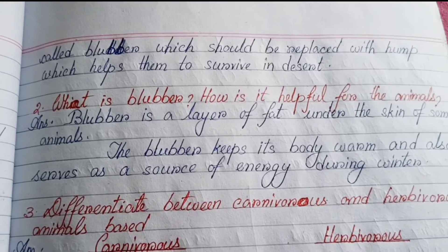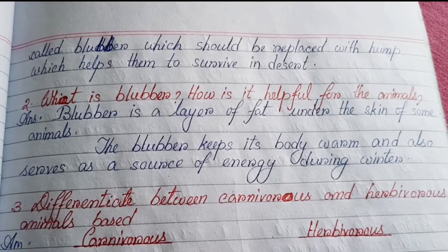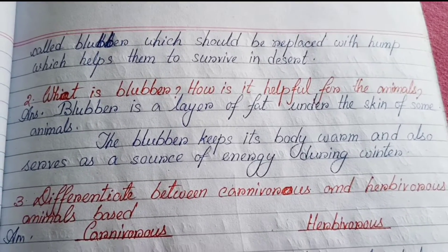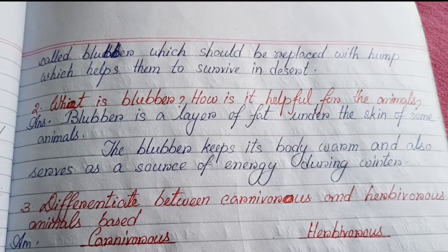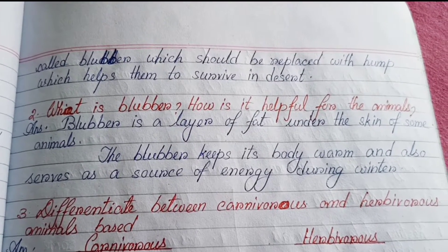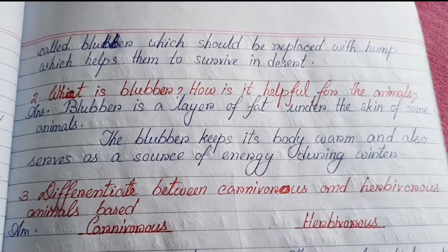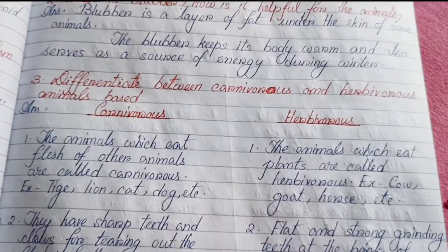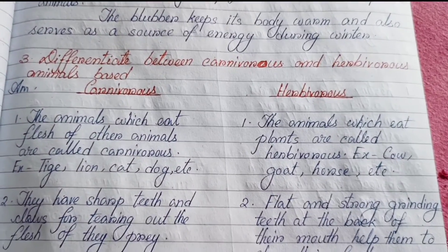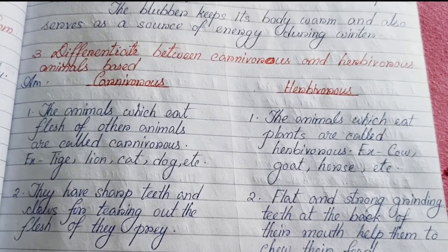Number two — What is blubber? How is it helpful for animals? Blubber is a layer of fat under the skin of some animals. The blubber keeps the body warm and also serves as a source of energy during winter.